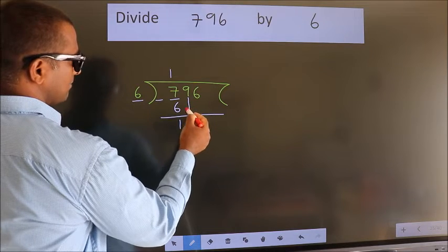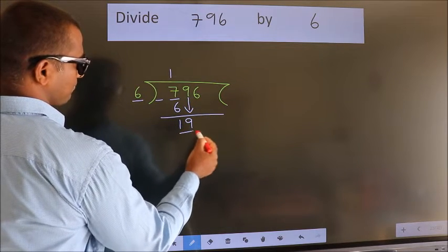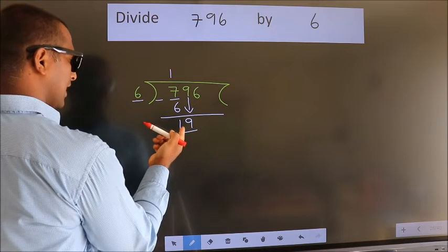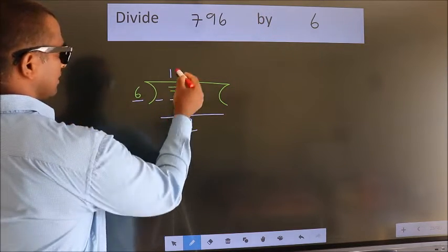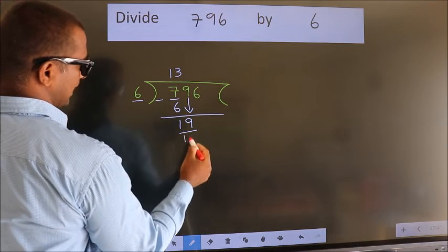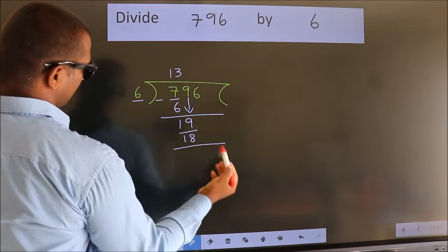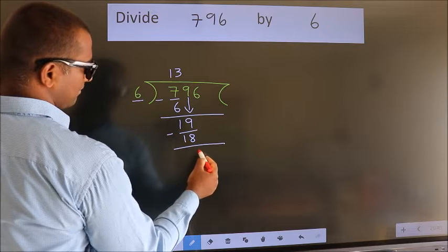After this, bring down the beside number. So, 9 down. 19. A number close to 19 in 6 table is 6 threes, 18. Now, we subtract. We get 1.